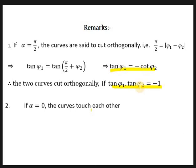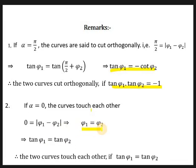Second remark: if α = 0, then the curves touch each other. This implies |φ1 − φ2| = 0, which implies φ1 = φ2, and further implies tan φ1 = tan φ2. Therefore, the two curves touch each other if tan φ1 = tan φ2. So, in summary: if tan φ1 · tan φ2 = −1, the curves cut orthogonally; if tan φ1 = tan φ2, the curves touch each other.